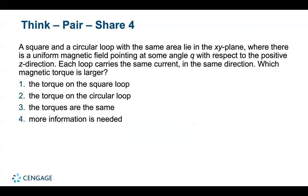Question: a square and a circular loop with the same area lie in the XY plane in a uniform magnetic field pointing at angle θ with respect to the positive Z direction. Each loop carries the same current in the same direction. Which magnetic torque is larger? The answer is the torques are the same.